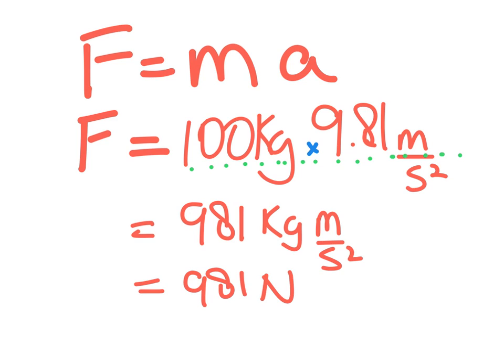So the actual weight of this guy, if he was here in Alberta, is 100 kilograms times 9.81 meters per second squared. What we end up getting is 981 kilogram meters per second squared, and this is converted to what we call newtons. He weighs 981 newtons.